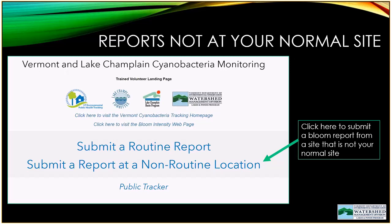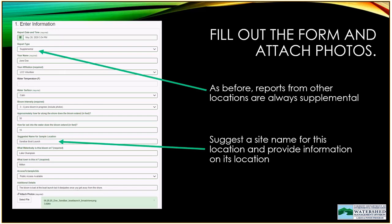For reports not taken at your normal site, use the second option: "Submit a Report at a Non-Routine Location." The form looks very similar to the first. It doesn't immediately ask for your reporting location since this is a non-routine site. Fill out date, time, and report type — this should automatically be a supplemental report since it's not your routine location. Then provide your name, affiliation, water conditions, and bloom intensity.